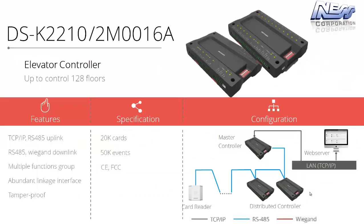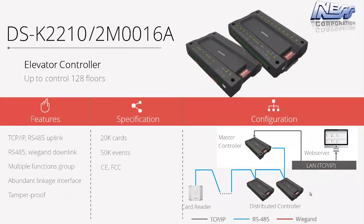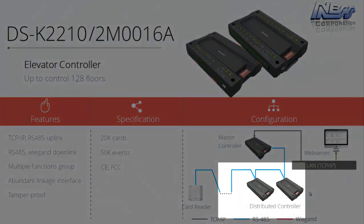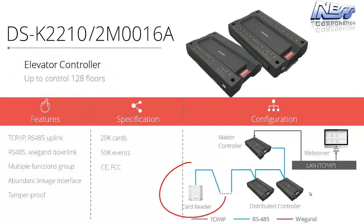The system also has an elevator or lift controller consisting of two parts. A master controller handles programming and holds all the database. Distributed controllers each support up to 16 relay outputs or 16 floors, and multiple distributed controllers can be added to support up to 128 floors per lift. Each elevator control system can support up to two readers, whether Wiegand or RS-485.